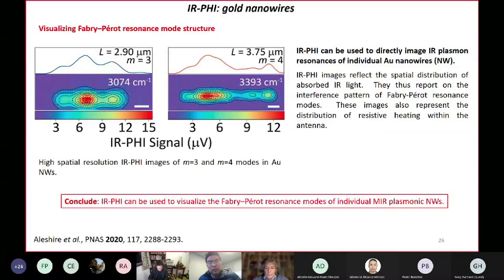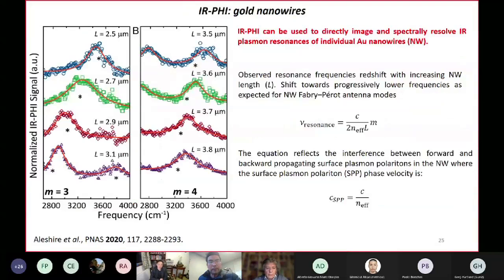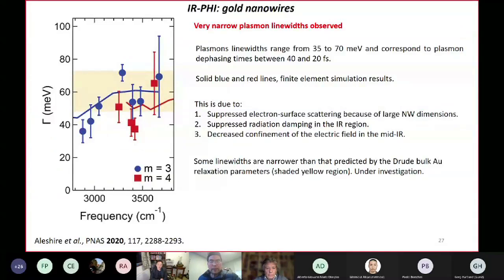And then finally, something about the line widths. If you look at the line widths, the line widths range from something like 35 to 70 meV. That corresponds to dephasing time between 40 femtoseconds and 20 femtoseconds. These are fairly large numbers compared to a vibrational time scale. It raises the prospect of using something like SEIRA, which is surface-enhanced infrared absorption spectroscopy, to allow you to look at very sensitive vibrational spectroscopies. Beyond that, these plasmon line widths are fairly narrow. That's shown here experimentally. They're narrow because you have suppressed scattering because of the larger volume of the wires, suppressed radiation damping in the mid-infrared because of the lower volume density of modes. The point is that the line widths are narrow, dephasing times are long.